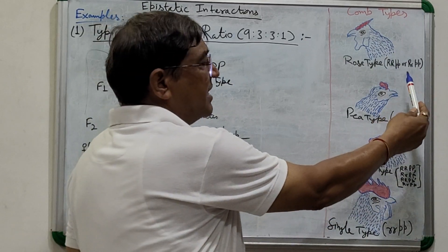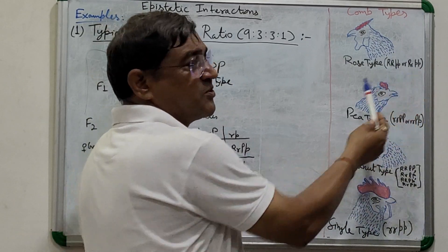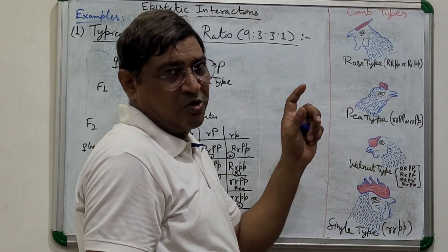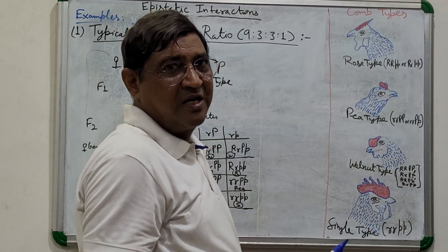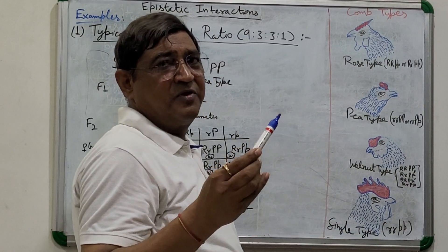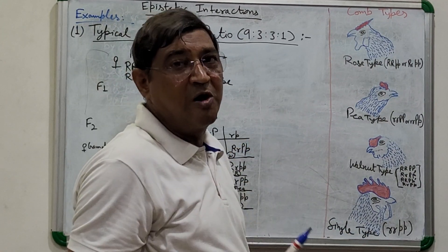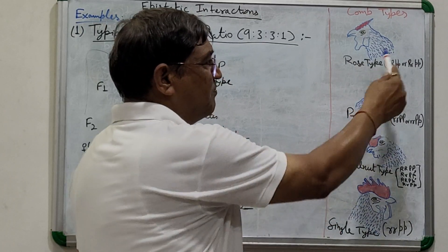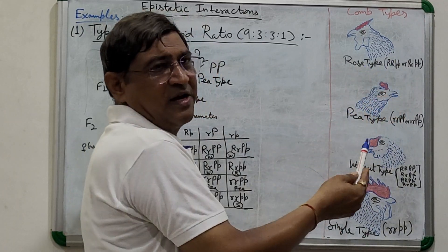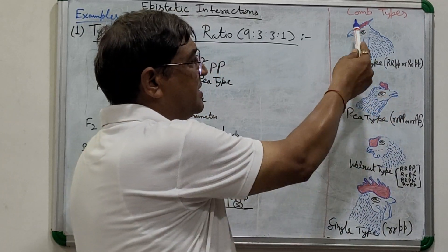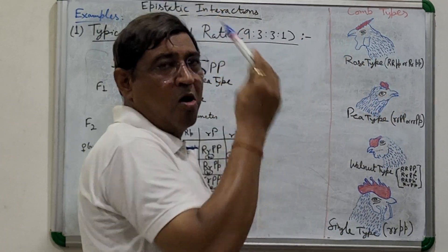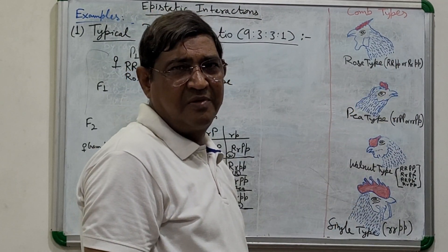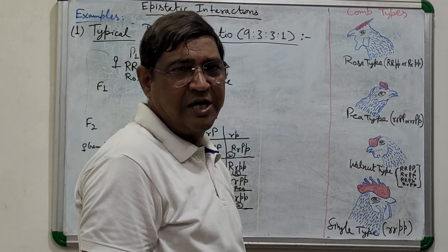Similarly, capital R small r with small p small p also gives the rose type of comb. So all poultry having these genotypes — where R is dominant and p is recessive — will show rose-type comb.